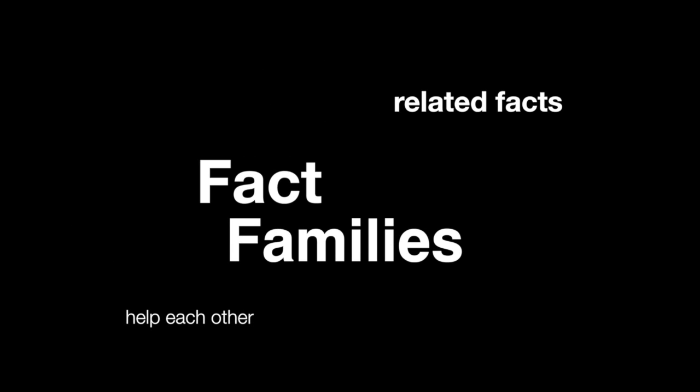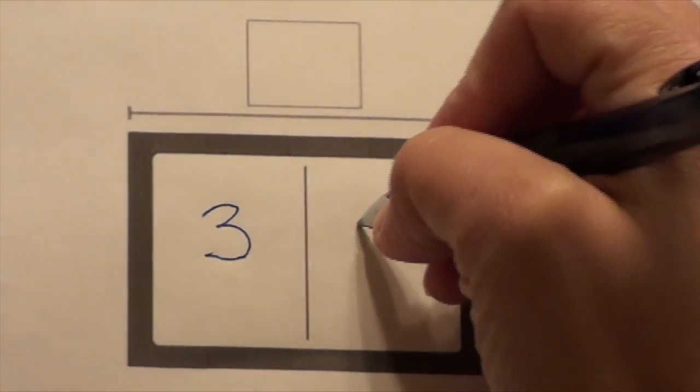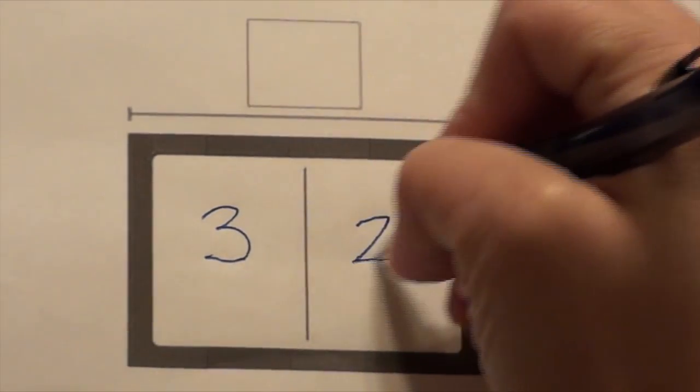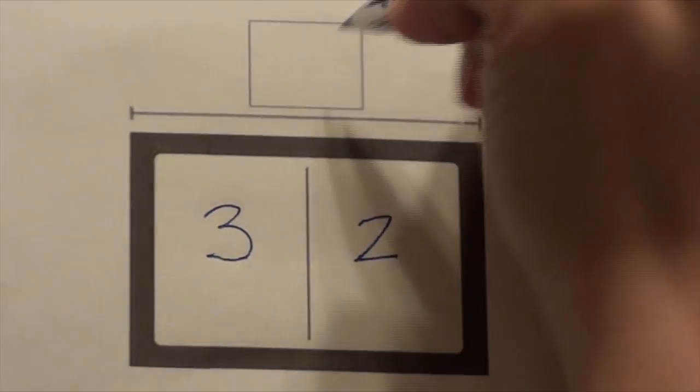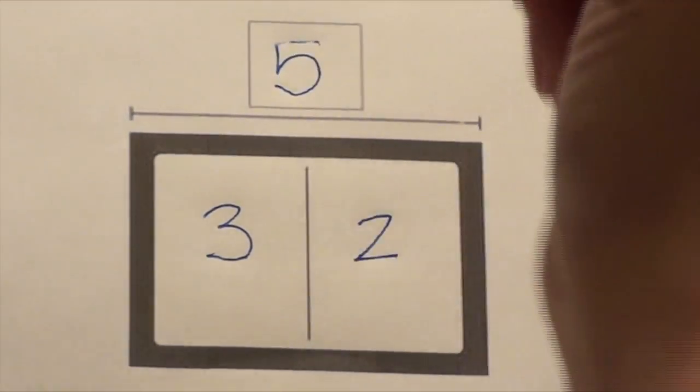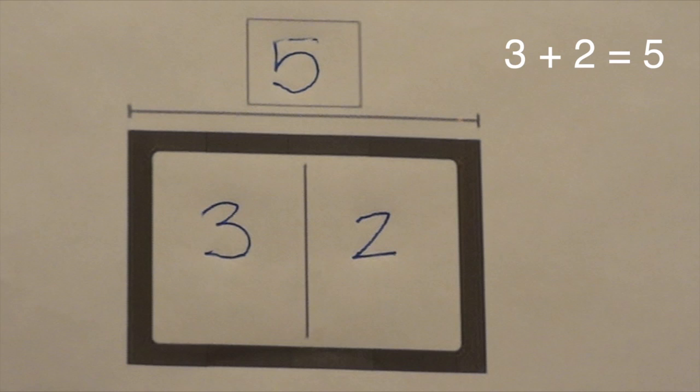In first grade you learned about fact families. You learned that addition and subtraction sentences are related and help each other out. This concept is very similar to part-part-whole. In an earlier lesson we talked about how two parts add up to create a whole. This example shows three and two as the parts which add together to create a whole of five. We would write this sentence: three plus two equals five.